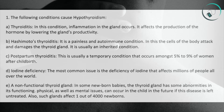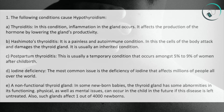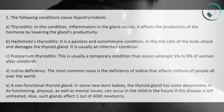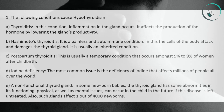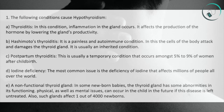B. Hashimoto's Thyroiditis: It is a painless and autoimmune condition in which the cells of the body attack and damage the thyroid gland. It is usually an inherited condition. C. Postpartum Thyroiditis: This is usually a temporary condition that occurs among 5–9% of women after childbirth.